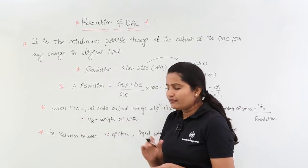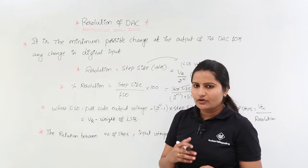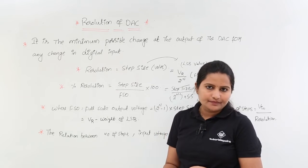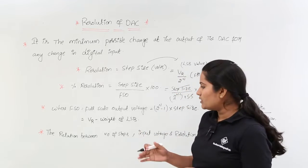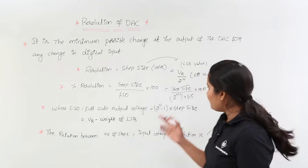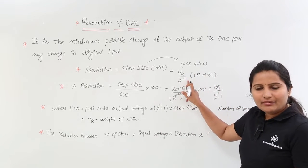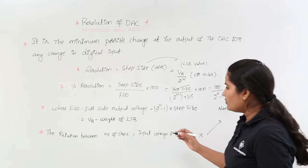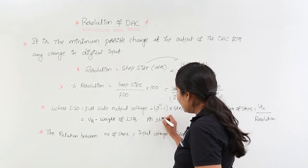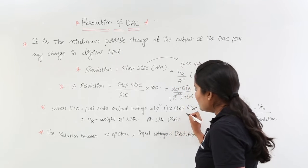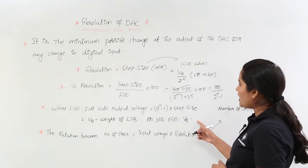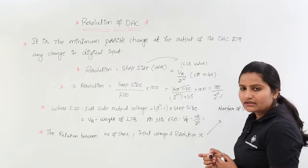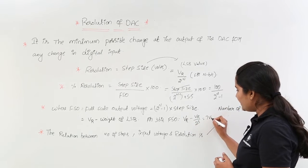For example, if you want to calculate the full scale output voltage for a 3-bit DAC, the weight of LSB is VR by 2 cube. For an n-bit DAC it is VR by 2 power n, so for 3 bits the LSB value is VR by 2 cube, which is VR by 8. The FSO for a 3-bit DAC is the reference voltage VR minus VR by 2 cube, that is 8VR minus VR divided by 8, giving 7VR by 8.